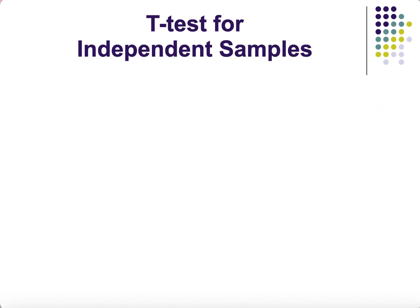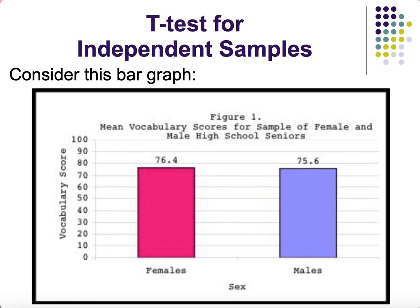I'm going to give you an example of why we need to learn this first. Consider this bar graph — Figure 1 shows the mean vocabulary scores for a sample of female and a sample of male high school seniors. At first glance you may say there's a difference; females scored 76.4 and males 75.6, so it's clear that females scored higher.